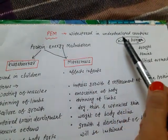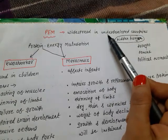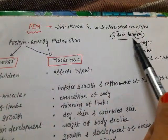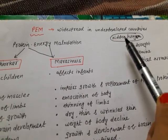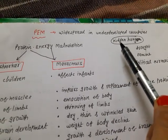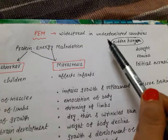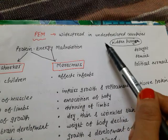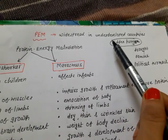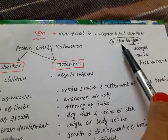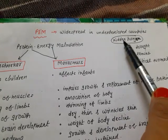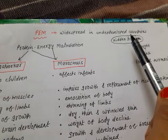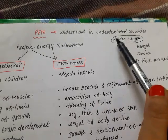These underdeveloped countries are suffering from hidden hunger. Hidden hunger means we eat food, but the nutrients in that food are very few. We are taking a nutrient-deficient diet — this is called hidden hunger.